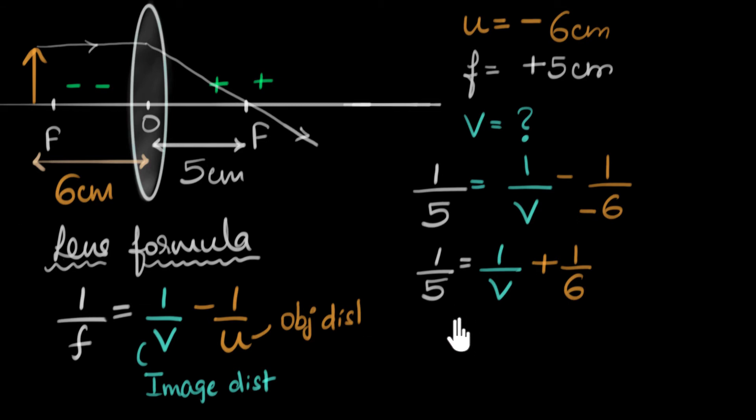And so, I want to figure out what one over v is. So, we'll subtract one over six from both sides. So, we will get one over five minus one over six equals one over v. And the one by six and minus one over six will cancel.